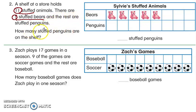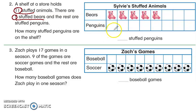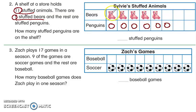How many stuffed penguins are on the shelf? I look at the graph and I know there are five bears, so I can just count on to figure out the penguins. I'm going to use counters instead of drawing the penguins to make it easier. I already have five, so I count on: five, six, seven, eight, nine, ten, eleven.